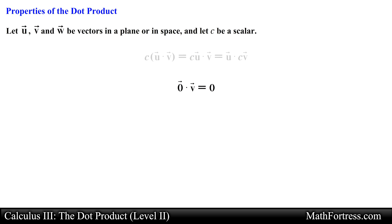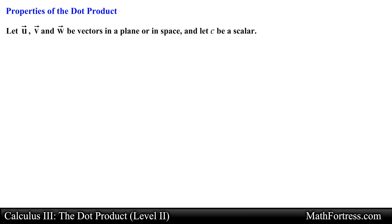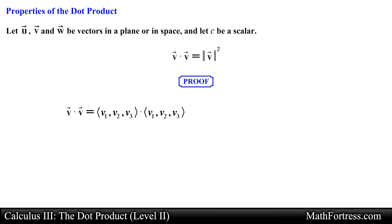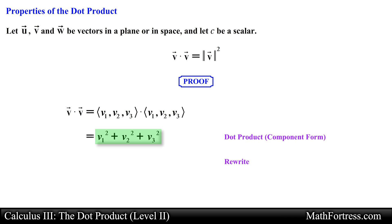The fourth property, introduced in the previous video, states that the zero vector dot any vector v is equal to zero — the zero vector is orthogonal to every vector. The fifth property is that the dot product of a vector with itself equals the magnitude of the vector squared. As a proof, we compute v dot v and obtain an expression already contained in the formula for the magnitude of a vector.